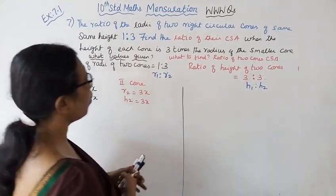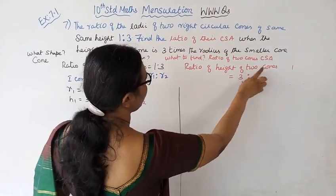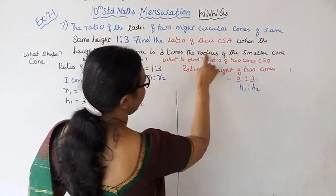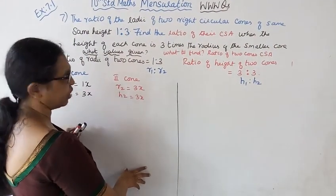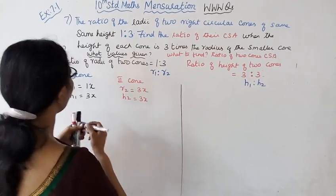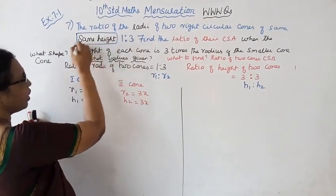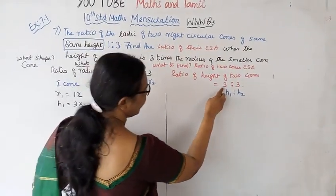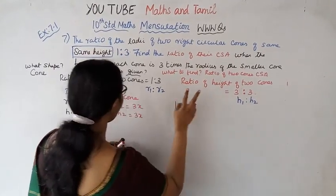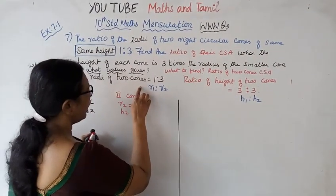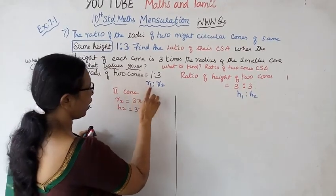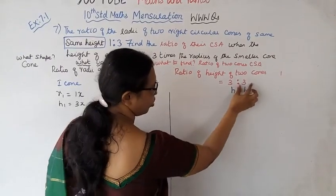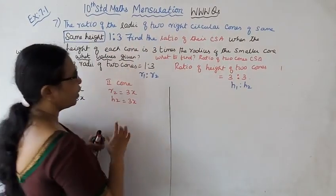Next, what else is given? The ratio of the height of 2 cones. When the height of each cone is 3 times the radius of the smaller cone — that means same height. So H1 is to H2 is 3 is to 3, meaning both cones have the same height.